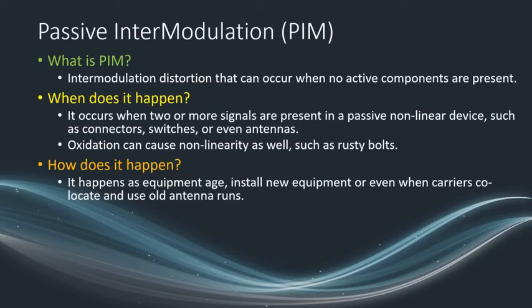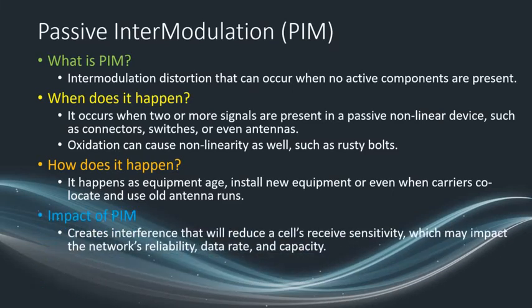What's the impact of PIM? PIM is considered a serious issue for cellular operators who want to maximize network reliability, data rate, and capacity, which can lead to positive return on investment. The impact of PIM on the network will be creating interference that will reduce the cell receiver sensitivity, which may impact network reliability, data rate, and so forth. When the receiver sensitivity drops, the cell coverage is diminished. When the cell coverage is diminished, we are serving less people — less people means less return on investment.